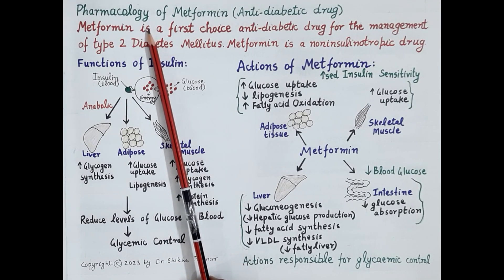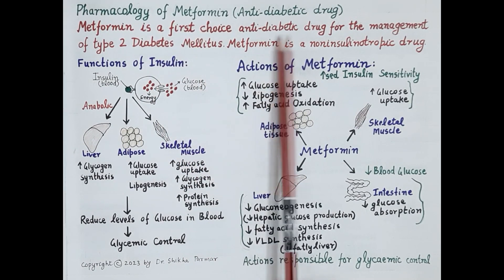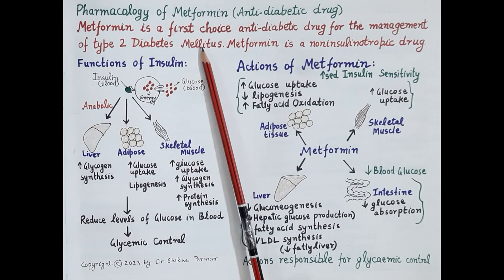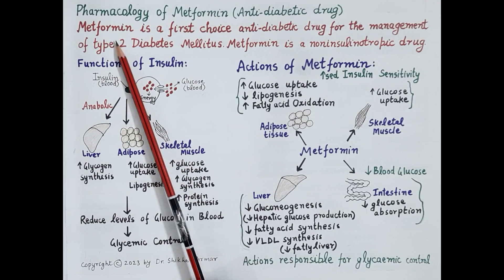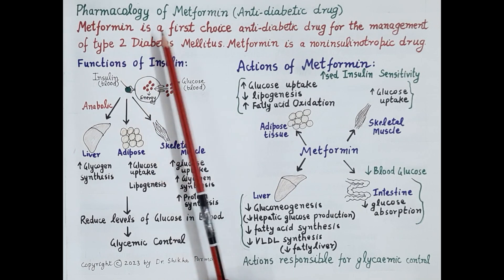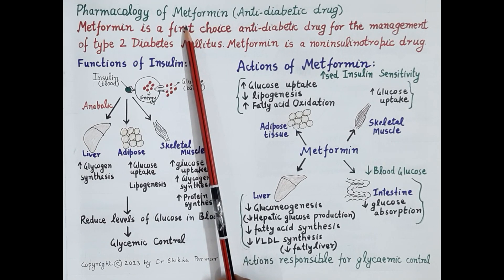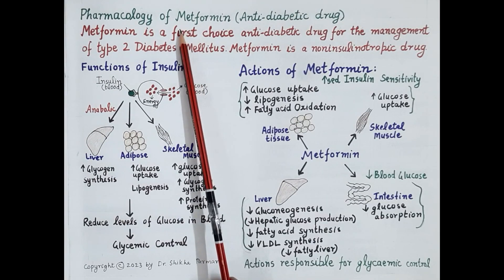Hello students. In today's video we will discuss pharmacology of metformin. Metformin is a first choice oral anti-diabetic drug for the management of type 2 diabetes mellitus. It is given as monotherapy or as combination therapy along with other anti-diabetic drugs as per the discretion of the physician. It is especially valuable for obese patients as it may reduce body weight. In this video we are going to study mechanism of action, pharmacological actions, advantages of metformin over other anti-diabetic drugs, pharmacokinetics, adverse effects, contraindications, and important drug interactions of metformin.